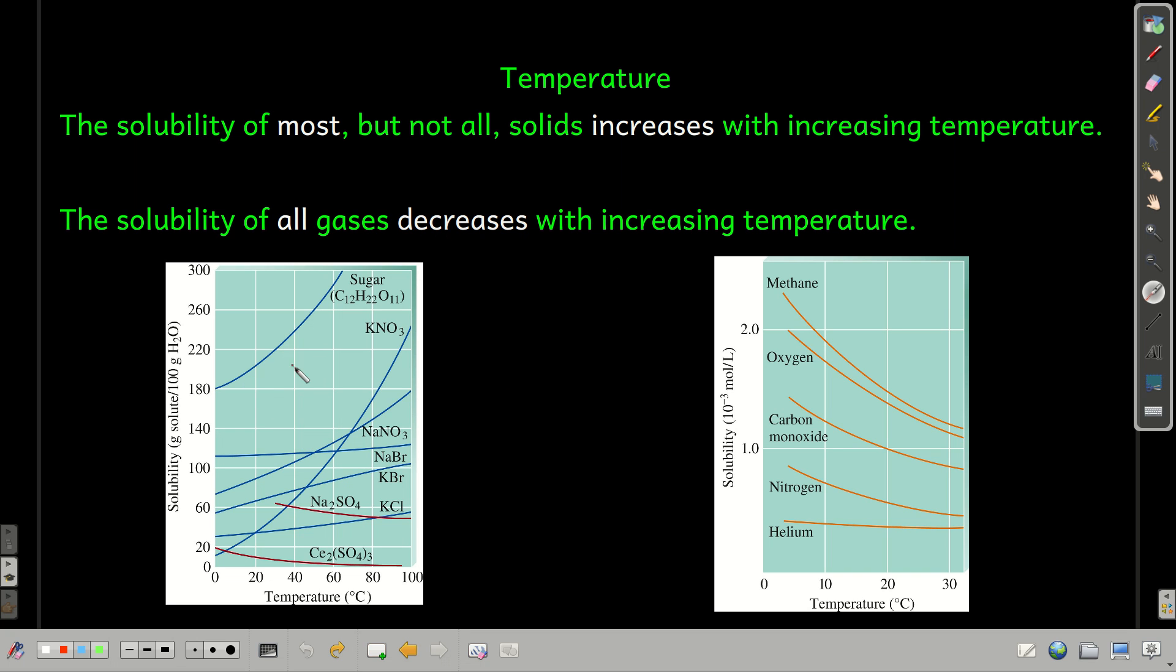So, these graphs here just give the solubility of some solids as a function of temperature, and most of them certainly increase, some more than others. Potassium nitrate has a real sharp curve here. Notice potassium chloride, it's a pretty shallow curve right here. But some of them, the solubility decreases as you increase the temperature, sodium sulfate and cerium sulfate. And we talked a little bit about that before.